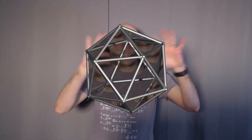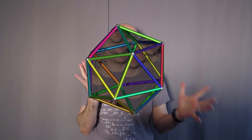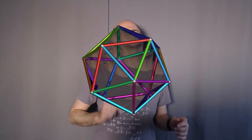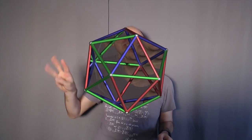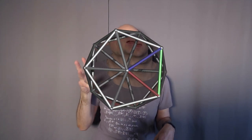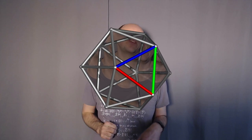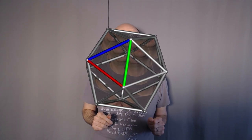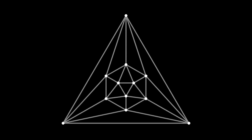I want to color the edges of this icosahedron. I can color them however I like, but here are the rules: I want to use three colors, and on each triangular face I want each of those three colors to appear. Let's see if this is possible. Here are the 12 vertices and the 30 edges, and we can count out the 20 triangular faces.